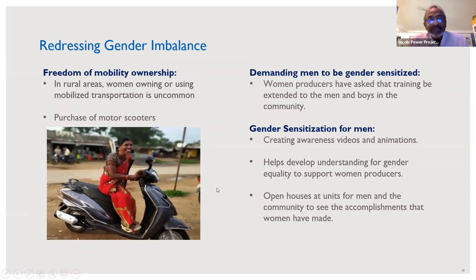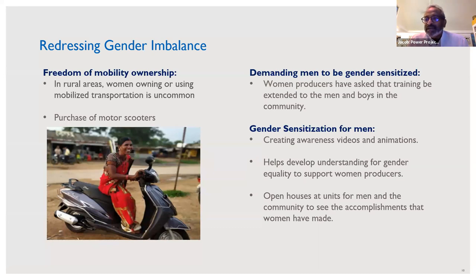In terms of redressing gender balance, one of our master weavers earned enough money during the pandemic to purchase her own motor scooter. Other women came to her asking how she did it. Owning a motor scooter is a symbol of mobility, and mobility is linked to freedom and independence — a major step forward. Four other women from her village joined the enterprise, and three women ended up buying motor scooters of their own. You now have a village with three scooter-riding ladies.